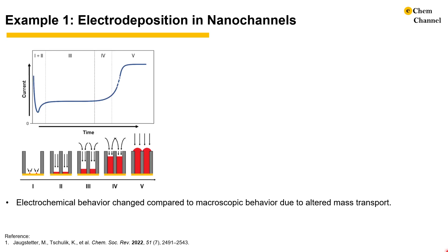Electrodeposition in nanochannels is a good example of electrochemical behavior deviating from the bulk. In the current profile, the initial drop is due to seed formation and 1D diffusion, as shown in regimes 1 and 2. Then the main deposition happens in regime 3, with a steady metal deposition shown as a plateau in the current profile. When the nanochannel is close to filling up, the electrodeposition behavior becomes comparable to macroscopic behavior and causes a sudden increase in the current, as shown in regimes 4 and 5.